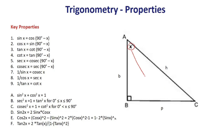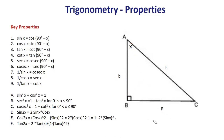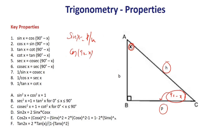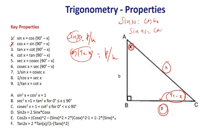In a right triangle, if one angle is x, the other must be 90 − x. For angle x, sin x = perpendicular/hypotenuse. For angle (90 − x), cos(90 − x) also equals perpendicular/hypotenuse. So sin x = cos(90 − x), and similarly cos x = sin(90 − x). Applications: sin30 = cos60, sin45 = cos45, sin60 = cos30.